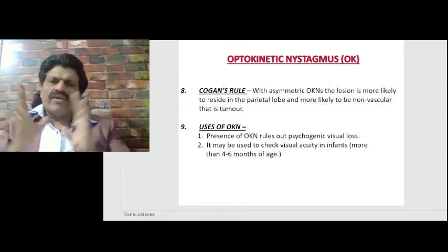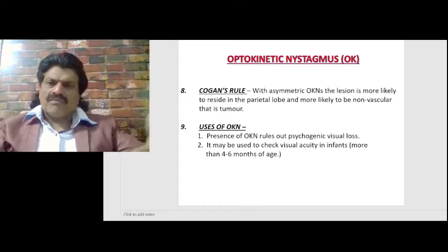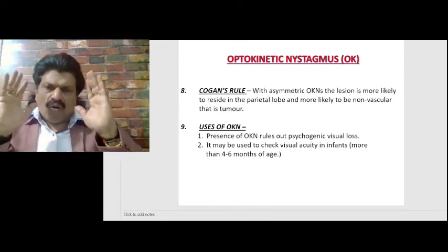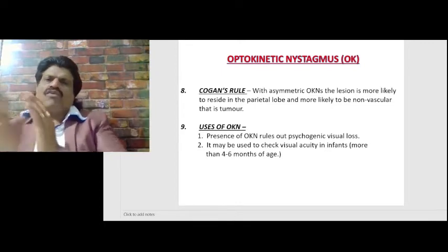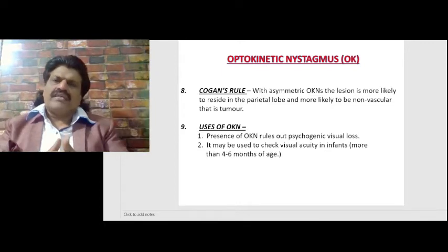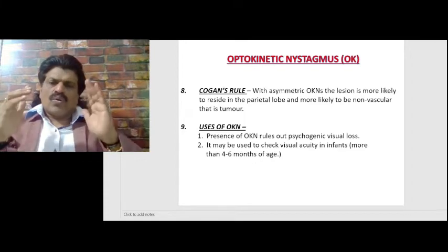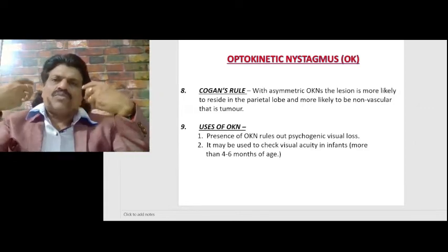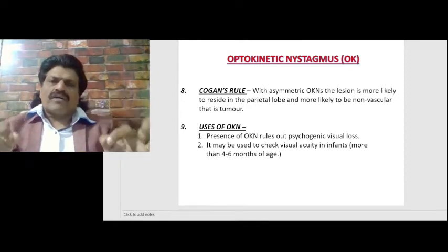One important use of optokinetic nystagmus: its presence rules out psychogenic visual loss. A person may feign visual loss to gain sympathy or for other reasons. To test this, ask the person to sit in a chair, place a rotating drum in front of them, and ask them to follow the objects. Even if they claim not to see, if they are actually seeing the moving stripes, the optokinetic nystagmus will manifest as pursuit followed by saccades.